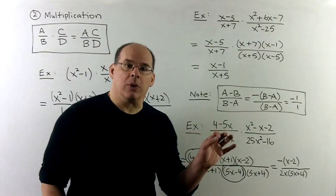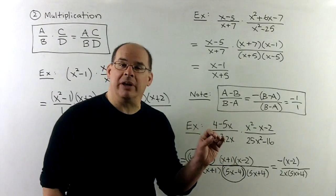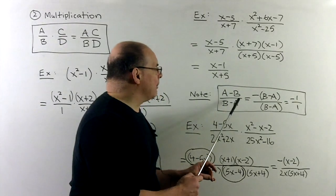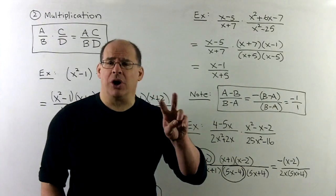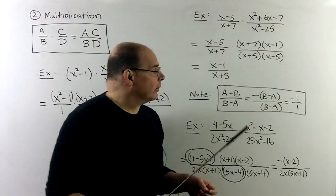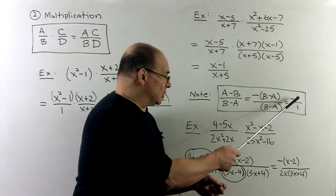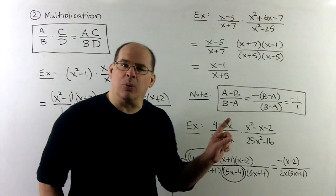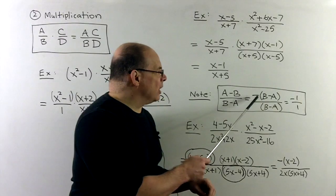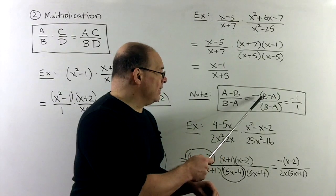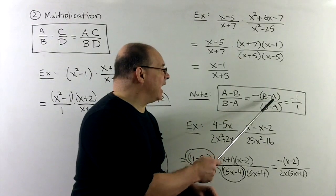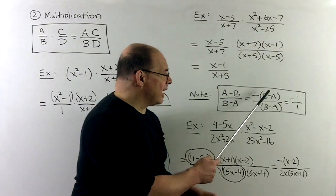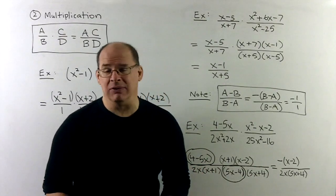Now, important note when working with rational expressions, not really a thing with rational numbers. If we have a minus b over b minus a, so the same terms, but they're in a different order, then we could just cancel them out to get a minus 1. A couple ways you could think about this, but the way I think of it is, if you multiply minus 1 times b minus a, then that's going to give you minus b plus a or a minus b. So, that accounts for why they're in the wrong order. Then the b minus a's will cancel, giving you your minus 1.